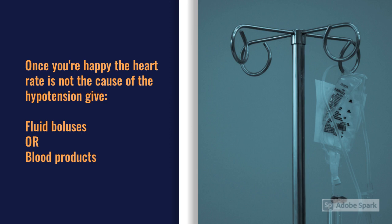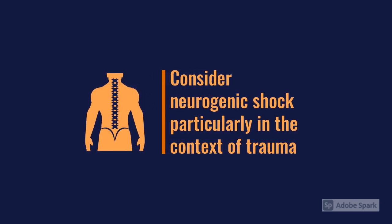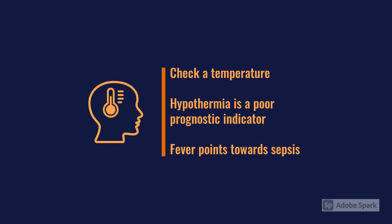Moving on to D — Disability — there's not a lot to say specifically for this presentation. The patient has already been laid flat. We can consider neurogenic shock here, particularly in the context of spinal trauma where neurological issues can help corroborate a diagnosis. Doing temperatures can be relevant in certain situations — in trauma or to give evidence towards a diagnosis like sepsis — but it's not specific to hypotension and fits within your normal A to E assessment.